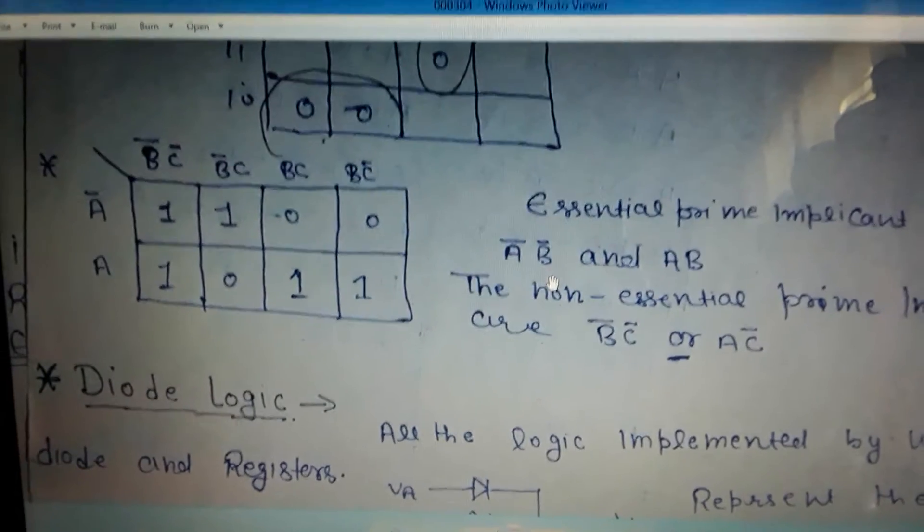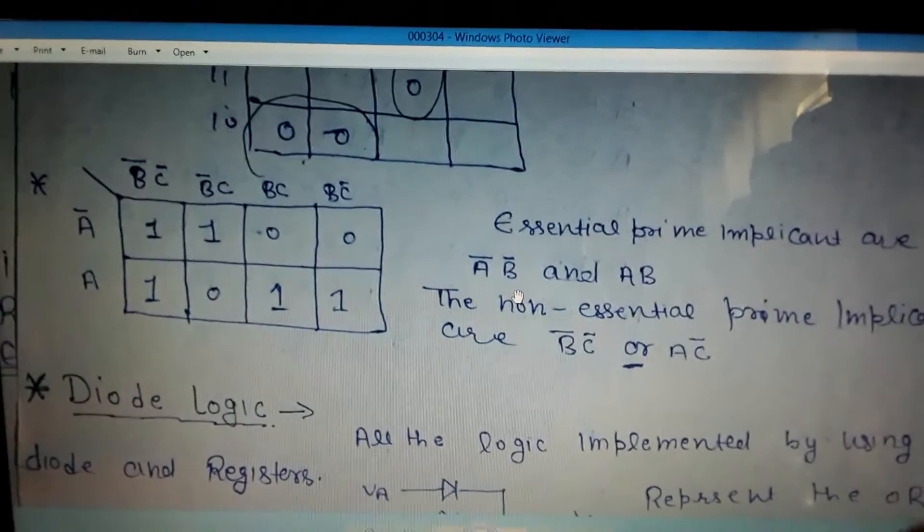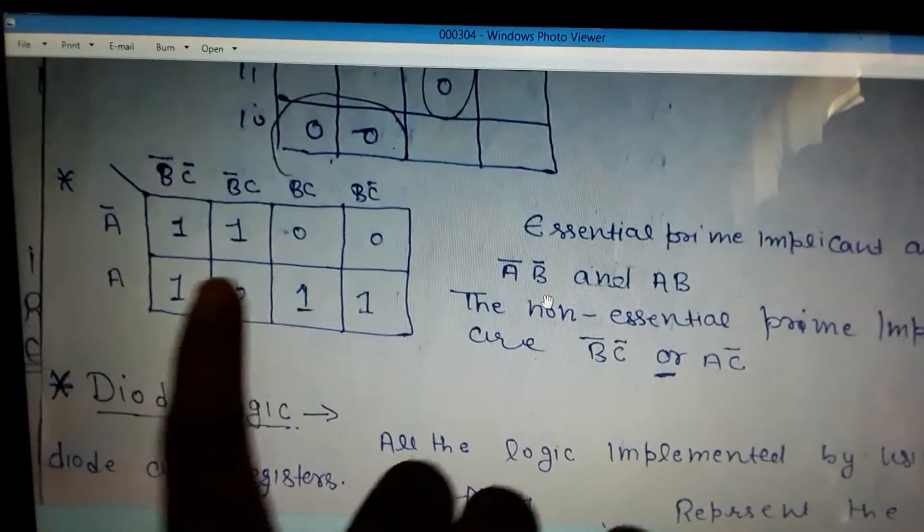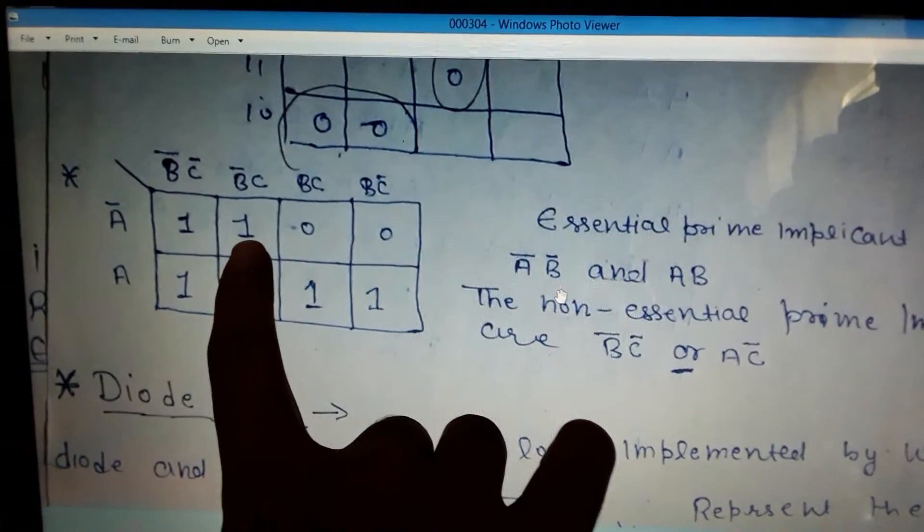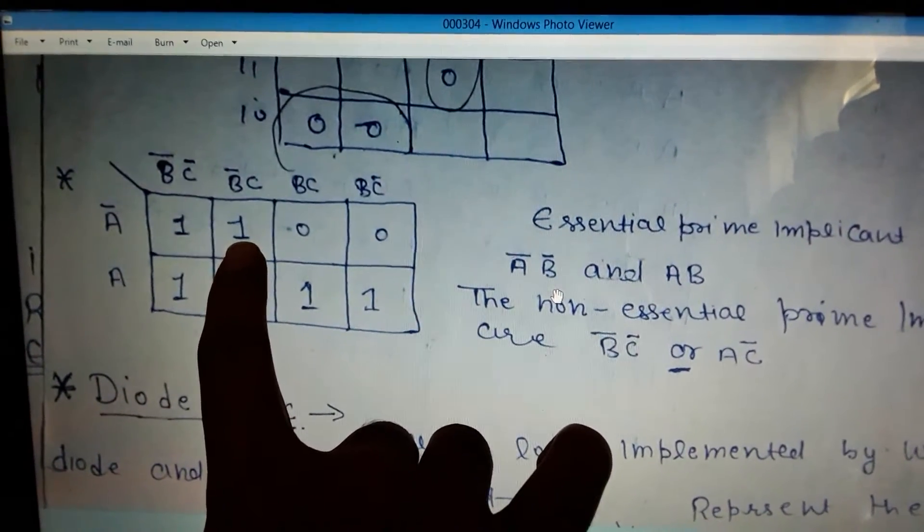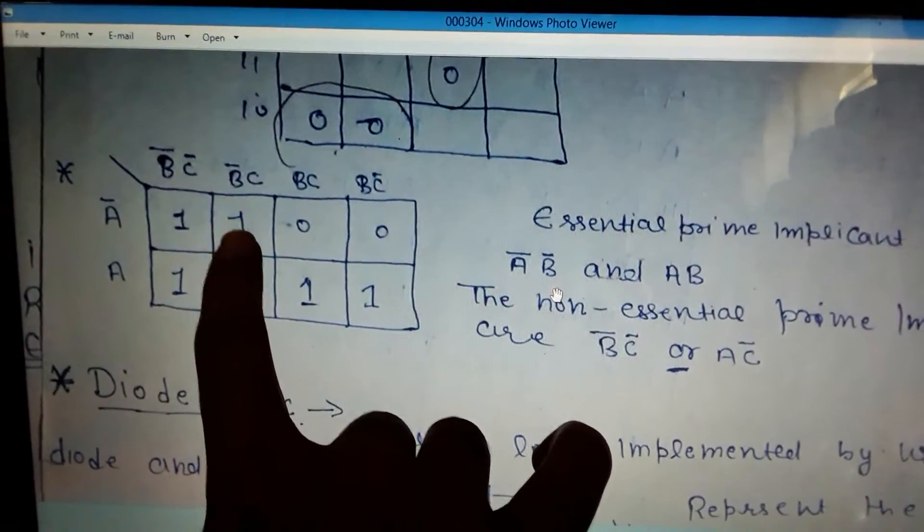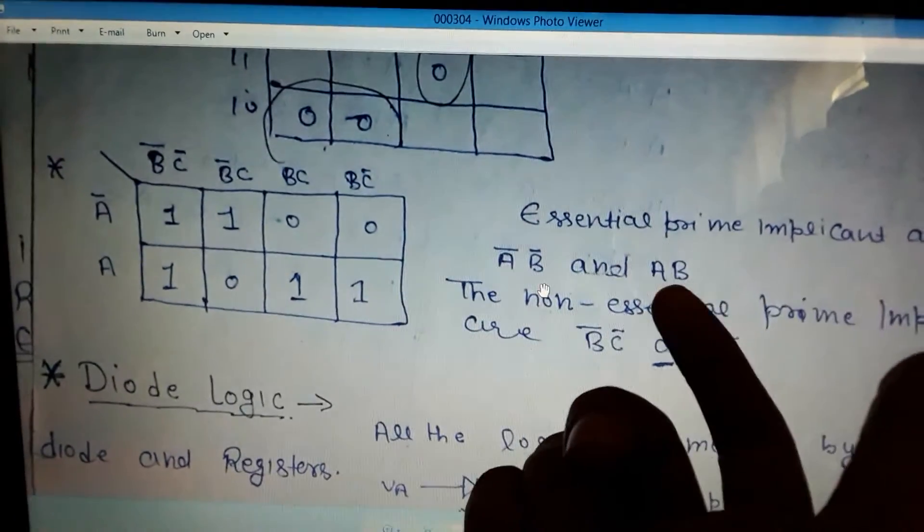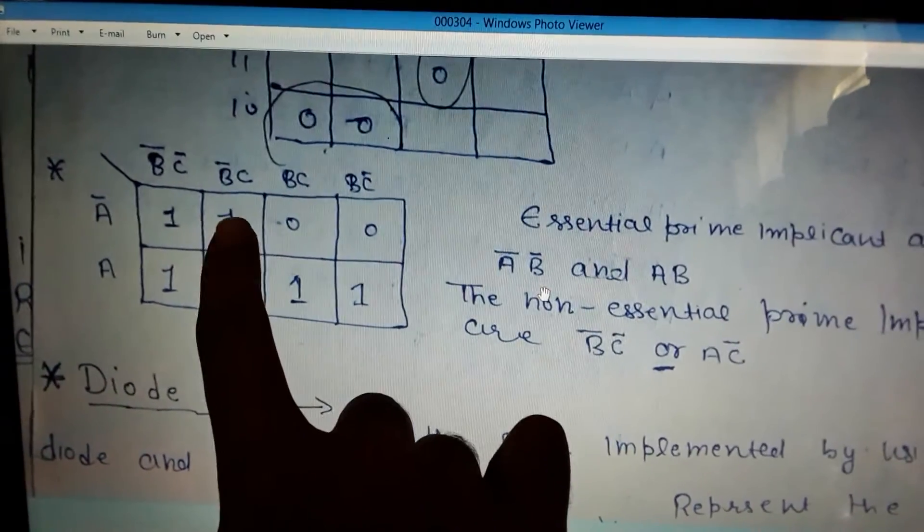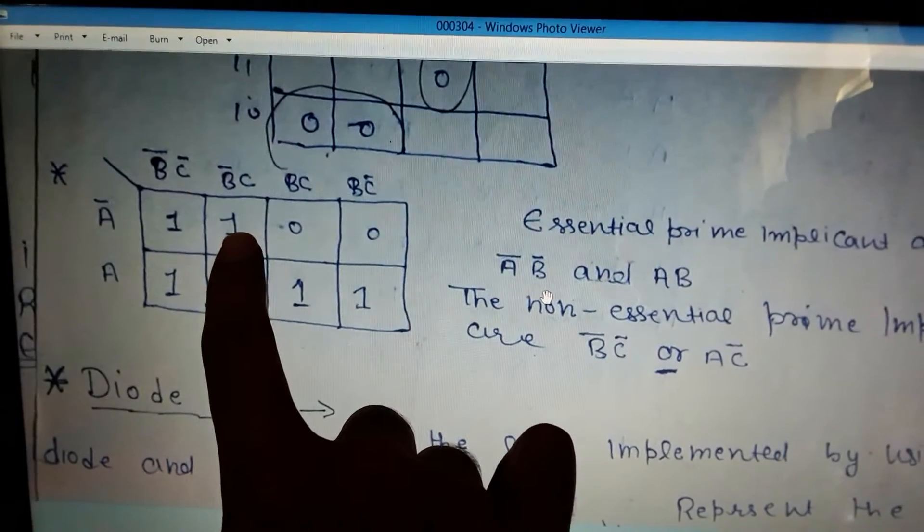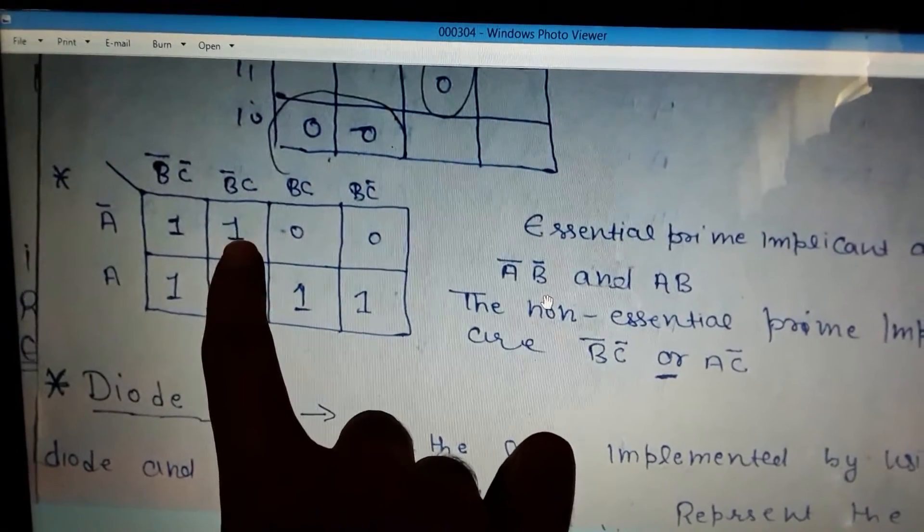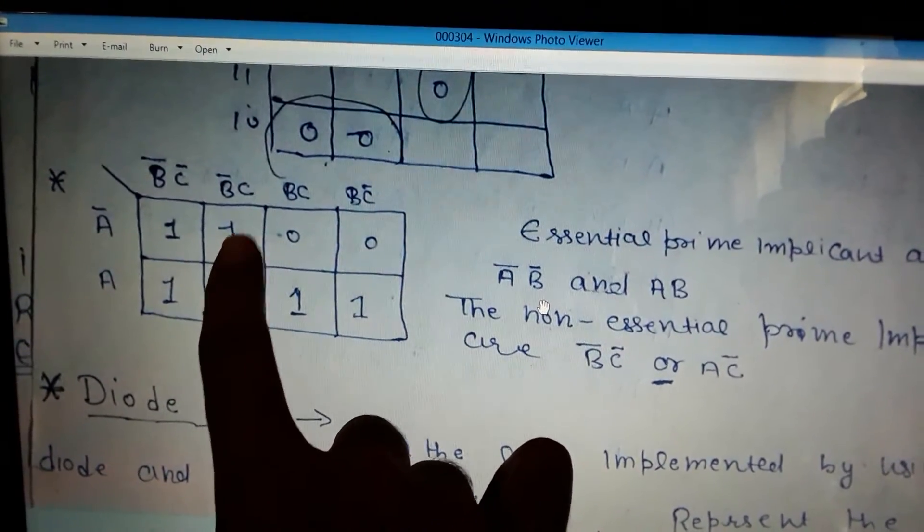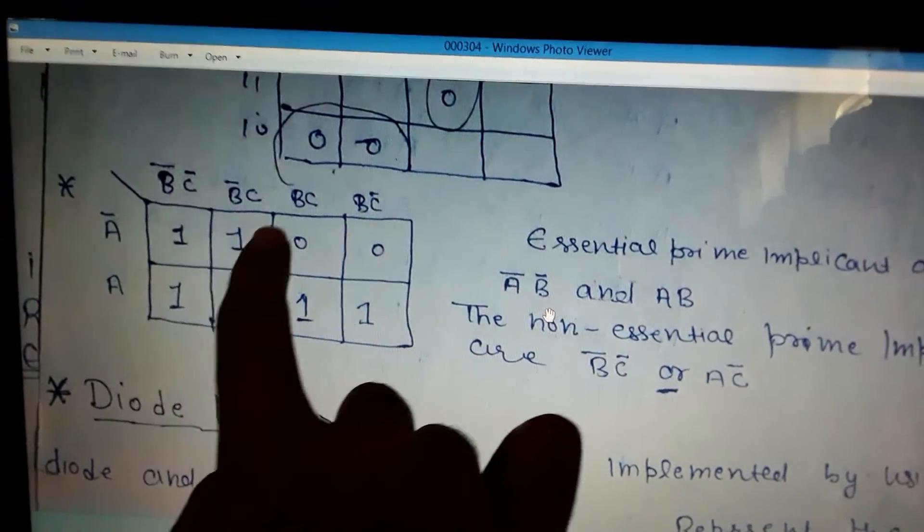Now I would like to tell you why these are essential. These are essential because look at this - this one has to be included because there is no option. This one has to be included in a term, and this term will be this, so A̅B̅ will be essential.